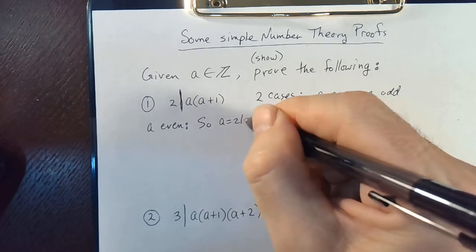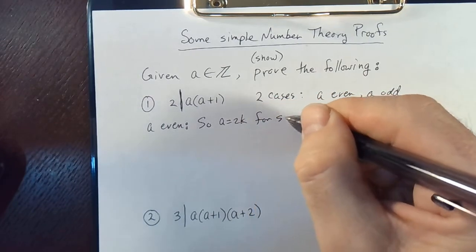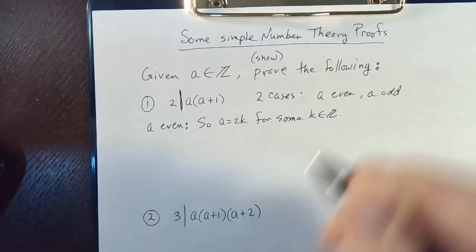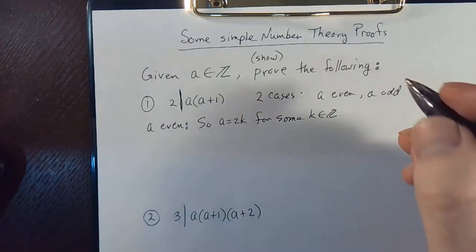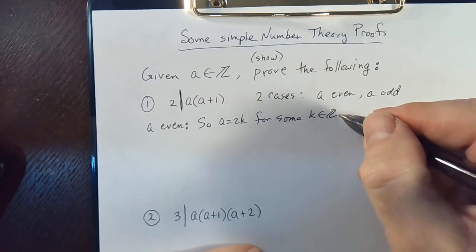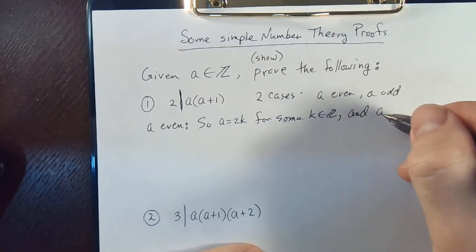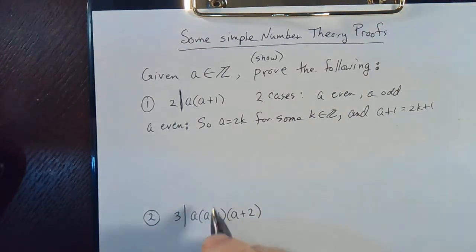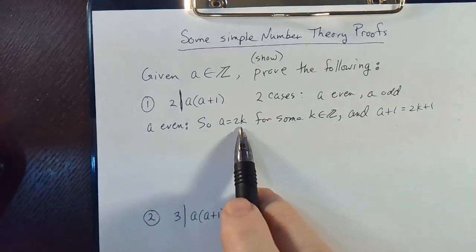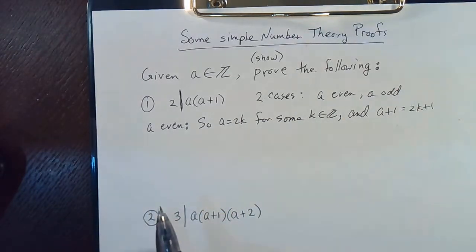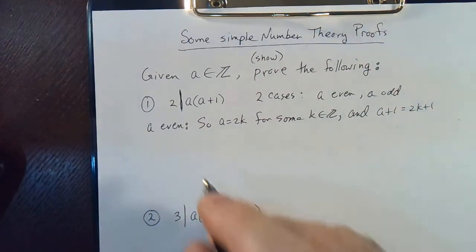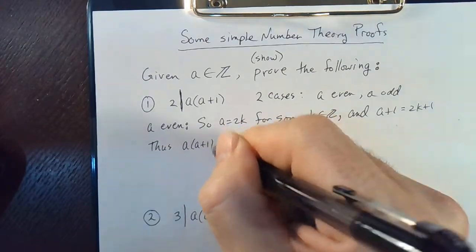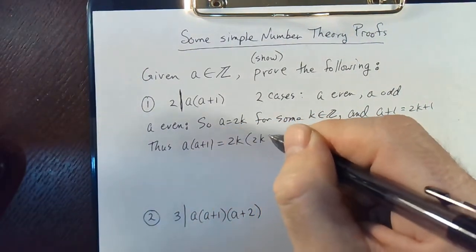So a is equal to 2k for some k in the set of integers — that's the definition of an even number. Therefore, a plus one is equal to 2k plus one. So that gives us a times a plus one is equal to 2k times 2k plus one.